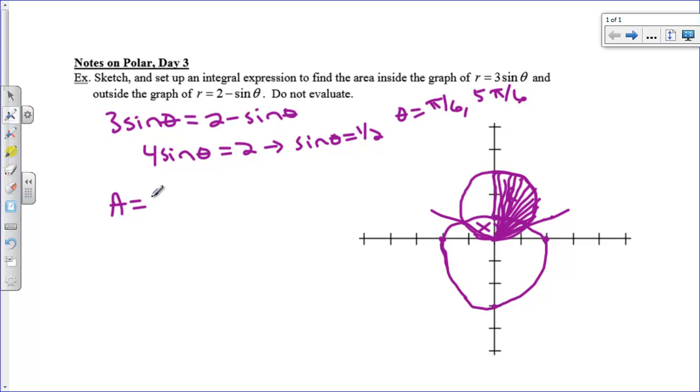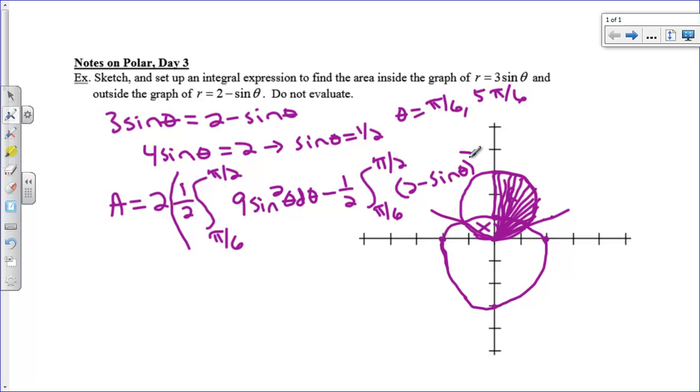My area is going to be 2 times 1 half integral from pi over 6 up to pi over 2. Keep in mind I'm taking advantage of symmetry here. I better put parentheses here, pi over 6 to pi over 2 of our circle squared. So that would be 9 sine squared theta d theta. And then I want to subtract off this area inside the limaçon. So I'm going to subtract off 1 half the integral from pi over 6 to pi over 2 of our limaçon, which is 2 minus sine of theta squared d theta.